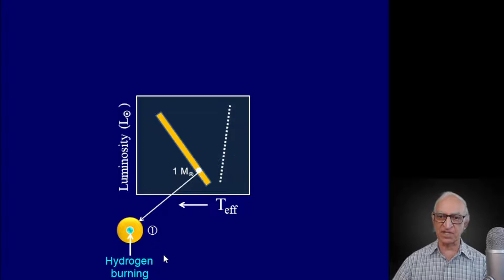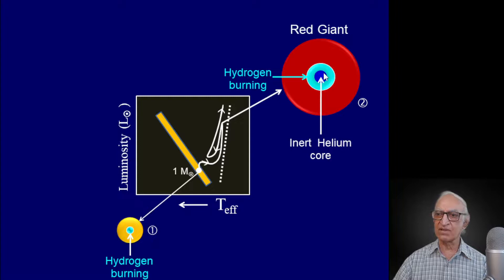Here is the main sequence of stars and here is a star with a mass equal to one solar mass. For most of its life — more than 90% of its life — it will spend on the main sequence, during which, right at the center of the star, it will be converting hydrogen to helium through fusion reaction. Over a period of time, a helium core will develop right at the center of the star.